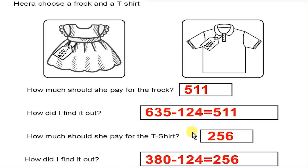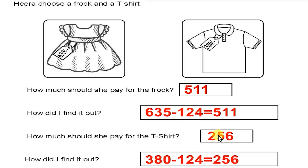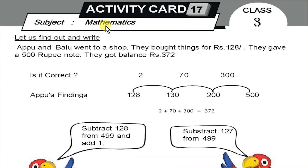The frock is $380 and the t-shirt is also $380. Discount price is $124 minus $380. How much should she pay? Let's find out and write.